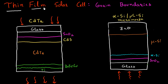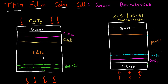When people talk about thin film based solar cells, they become very comfortable and accustomed to representing the different layers which go into thin film solar cells by this kind of a box, and then representing each layer by drawing a line.